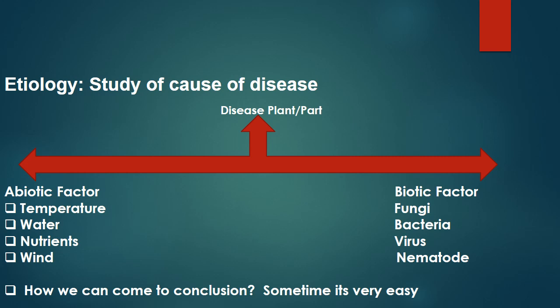The thing under investigation is either a diseased plant or its part. The basic question we first want to answer is whether this disease is due to some abiotic factor or it is due to some biotic factor, because the symptoms are confusing or most of the time intermingled. In the coming months you will see that when the temperature is more the plants become wilted.